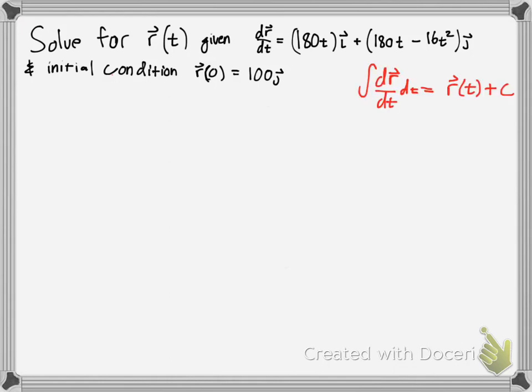You know that the antiderivative of dr dt dt is r of t plus c, because this is an indefinite integral, so we have a constant. Simply I'm going to take that equation, rewrite it, and put the integral sign there, because we're going to anti-differentiate.